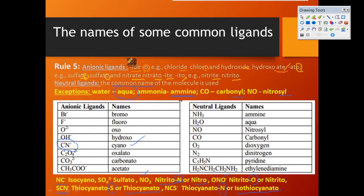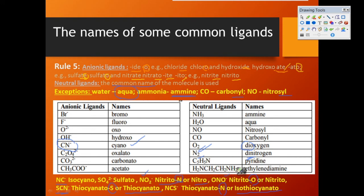In summary for Rule 5, anionic and neutral ligand naming has been covered. Ammonia is named 'amine', water as 'aqua', NO as 'nitrosyl', CO as 'carbonyl', and O₂ as 'dioxygen'. Similarly, N₂ is 'dinitrogen', C₅H₅N is 'pyridine', ethylenediamine (en) uses only one 'm' in 'diamine', and O₂²⁻ is named 'oxo'.